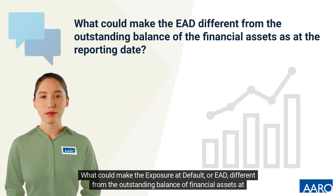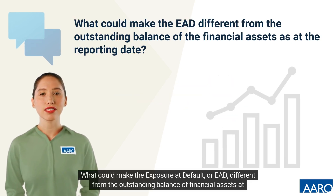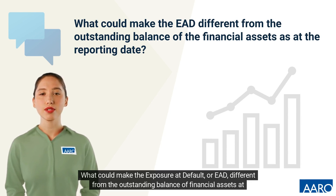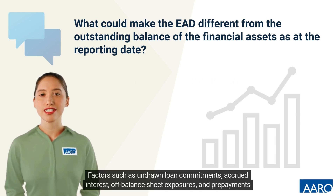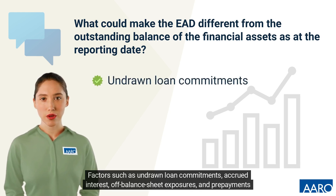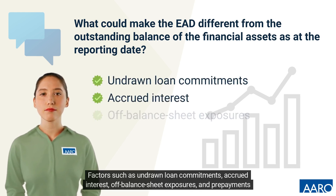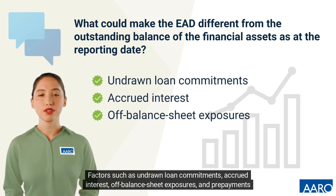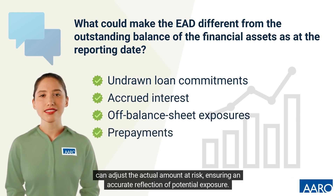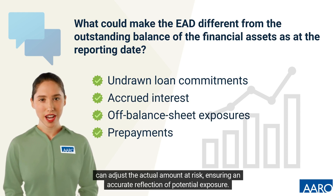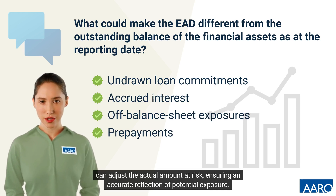What could make the exposure at default, or EAD, different from the outstanding balance of financial assets at the reporting date? Factors such as undrawn loan commitments, accrued interest, off-balance sheet exposures, and prepayments can adjust the actual amount at risk, ensuring an accurate reflection of potential exposure.